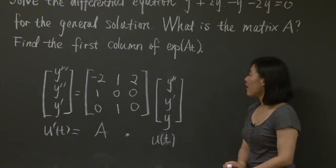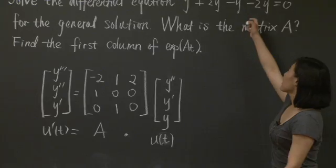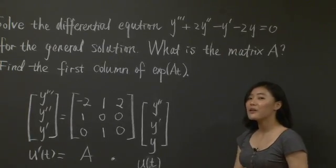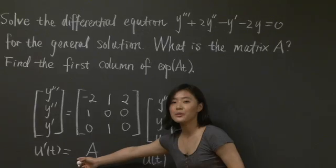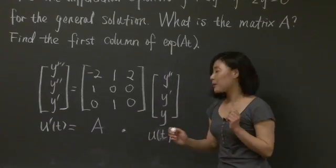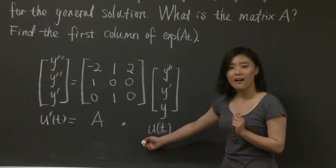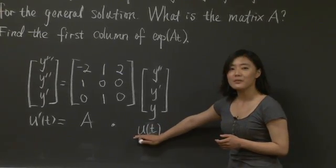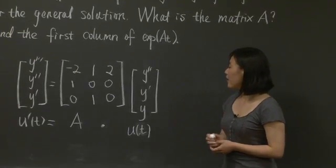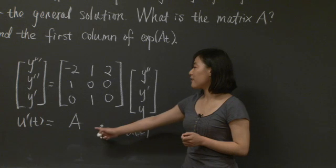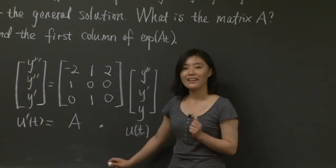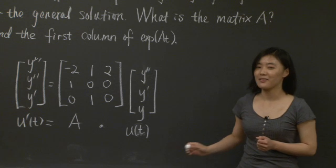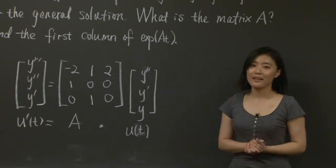Did you get the right answer? So we have transformed this third-order ordinary differential equation of y into a first-order differential equation of u(t). Although u(t) is a vector, if we can solve this equation for u, we have all the information we need for y. In order to solve this equation, we will need the eigenvalues and eigenvectors of this matrix A. Why don't you pause the video again and try to complete this problem on your own. When you're ready, I'm going to come back and show you how I did it.